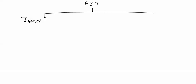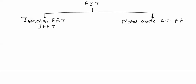Now we will see the classification of field effect transistors. FETs are divided into two categories. One is junction field effect transistor, also called JFET. The second type is metal oxide semiconductor field effect transistors, also called MOSFET or sometimes called IGFET.